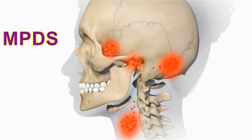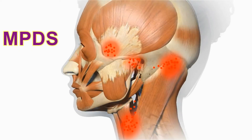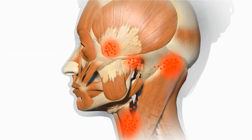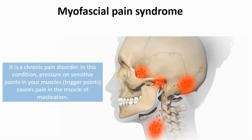Myofascial pain syndrome is a chronic pain disorder. In this condition, pressure on sensitive points in the muscles — called trigger points — causes pain in the muscle and sometimes in seemingly unrelated parts of the body. This is called referred pain.